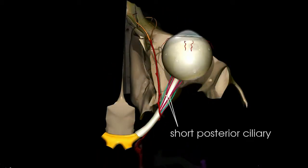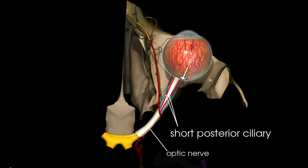You can see here the short posterior ciliary arteries highlighted in pink colour that pass around the optic nerve and pierce the sclera posteriorly to enter the choroid layer. I've just made the sclera transparent for a better visualisation.